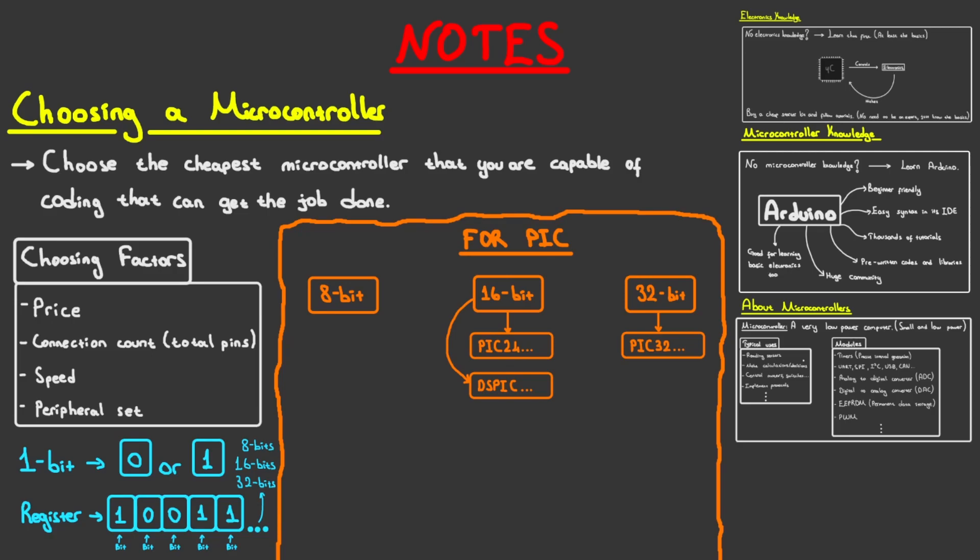8-bit microcontrollers' names typically start with PIC12, PIC16, or PIC18. PIC12 are old PIC series that have low number of connections and are slow. Most of the time, you won't be using them.